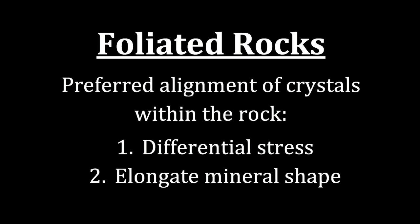Foliated metamorphic rocks show a preferred alignment of crystals within the rock, and this is caused by two things. The first is differential stress, and the second is elongate mineral shapes. Differential stress means that instead of being squeezed the same from every direction, the rock is squeezed more from one orientation than from the others.